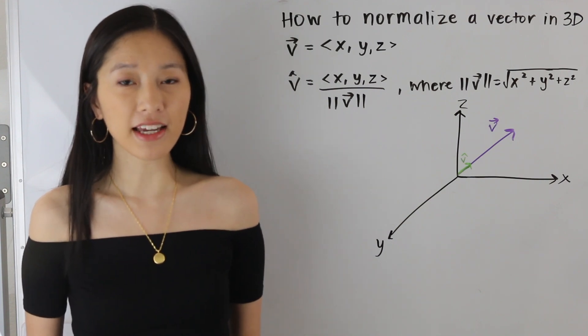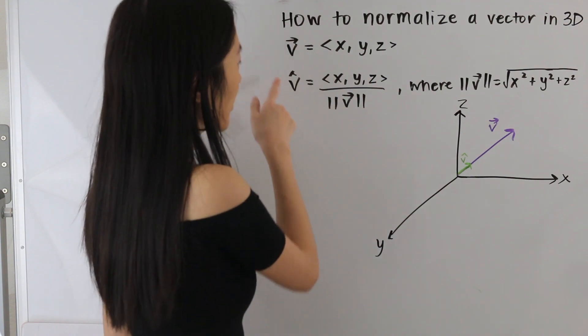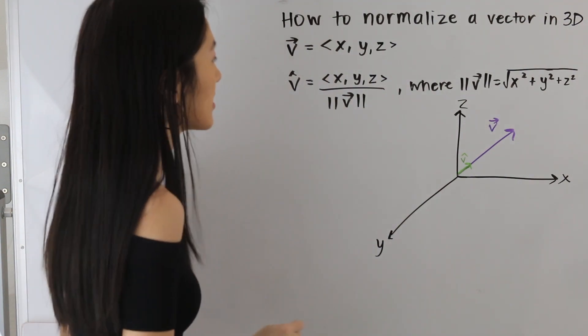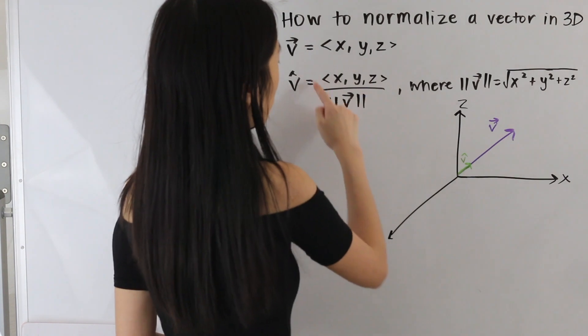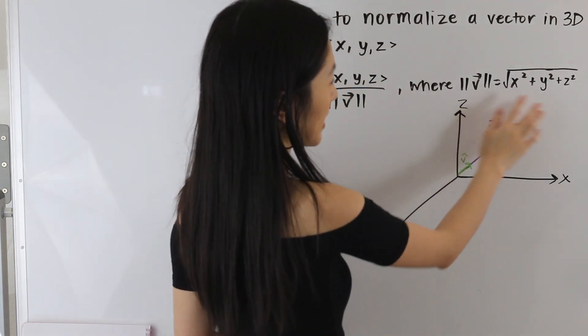So we have a vector here, v, and its components are x, y, and z here. And then we have the unit vector, which is the normalized vector, is given by the original vector divided by its magnitude, where the magnitude is found by the following formula.